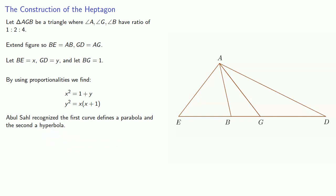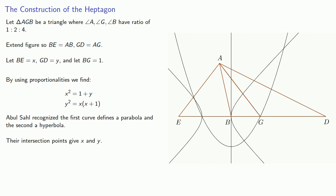So that means we can graph this parabola and the hyperbola. And the ordinate and abscissa of their intersection points gives x and y, which allows us to construct the required triangle.